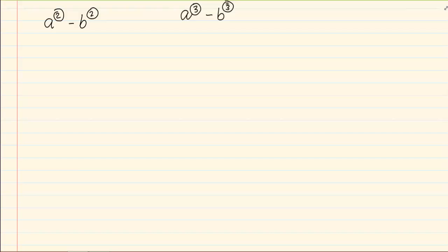When we are doing cubes the first bracket is always made up of the cube root of the first term and then our sign and the cube root of the second term. So in this case it would be a minus b. That was the only part that is similar in difference of two squares.